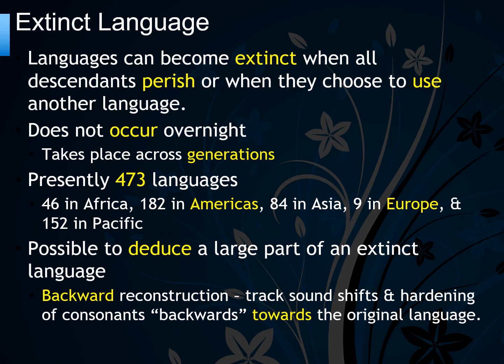Languages can become extinct when all descendants perish or when they choose to use another language. This does not happen overnight — it takes place across generations. Presently, 473 languages are going extinct: 46 in Africa, 182 in the Americas, 84 in Asia, 9 in Europe, and 152 in the Pacific.